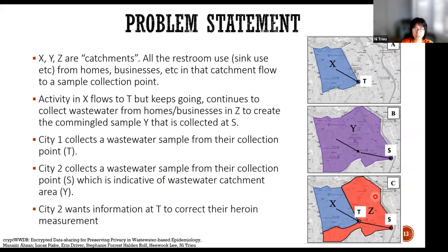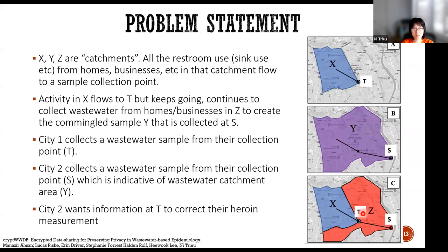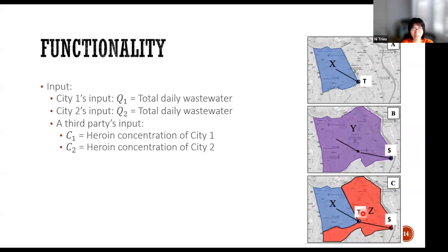At this point you might see why we need privacy. City two wants the catchment area data for error Z, meaning they need information at point T to compute something. The problem is that data collections can contain DNA or sensitive information, and city one is unable to simply give the sample at point T to city two. Even for me, I write out the functionality as math so it's easy to understand.